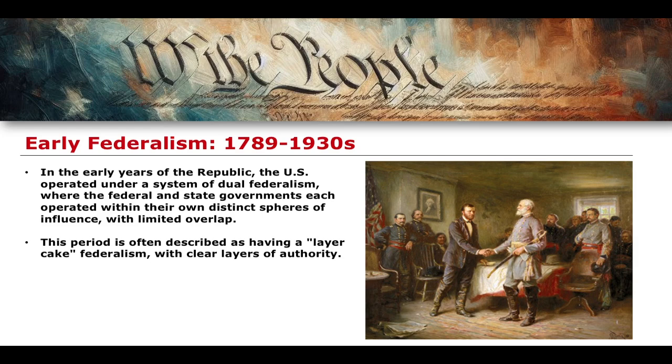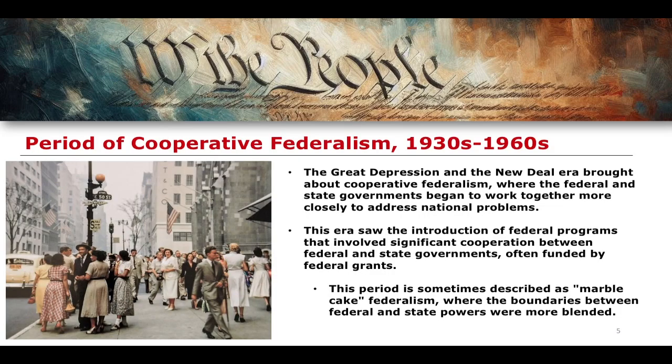That's why it's called layer cake federalism — it was a period in which there were clear layers of authority and these layers didn't necessarily cross in any meaningful sense. This is known as the early period of federalism. We then start to see a shift from the 1930s into the 1960s, this sort of 30-year gap, in which we start to develop an idea known as cooperative federalism.